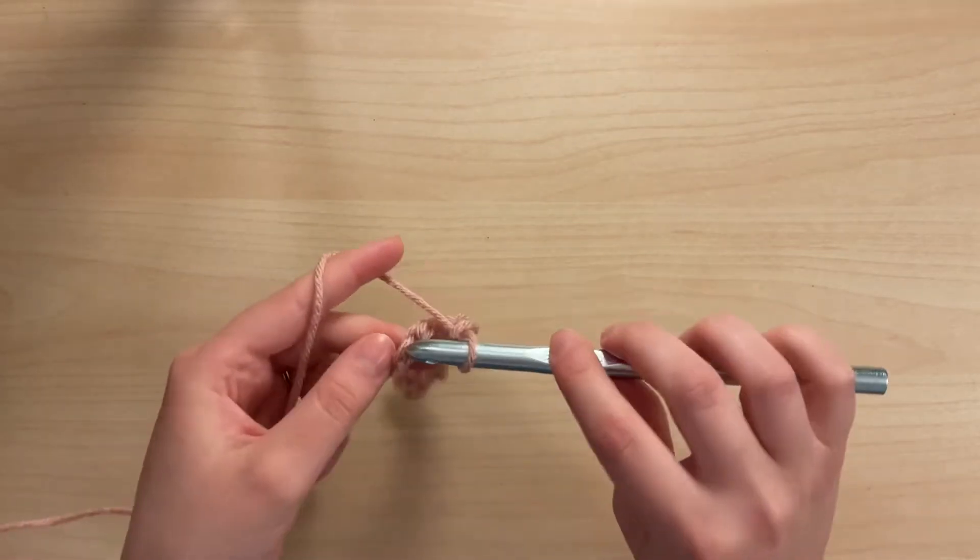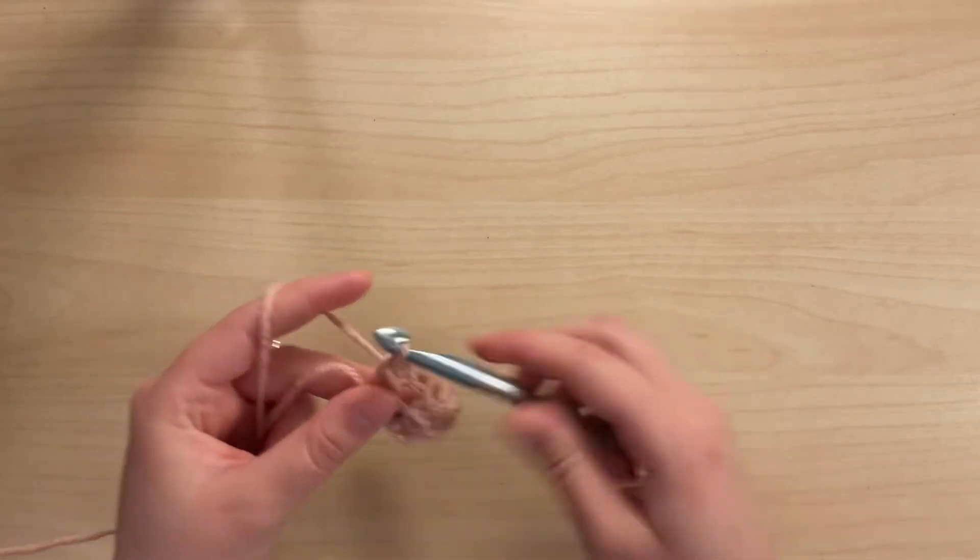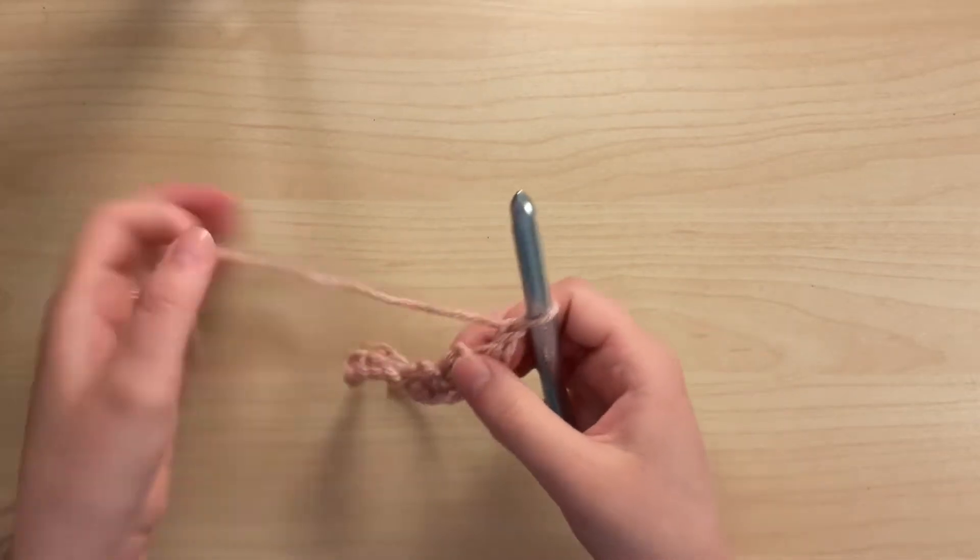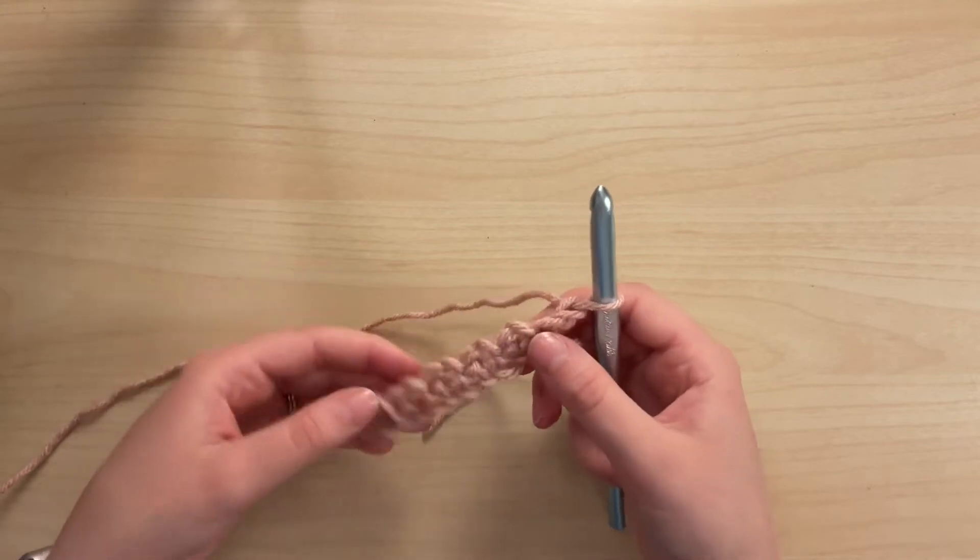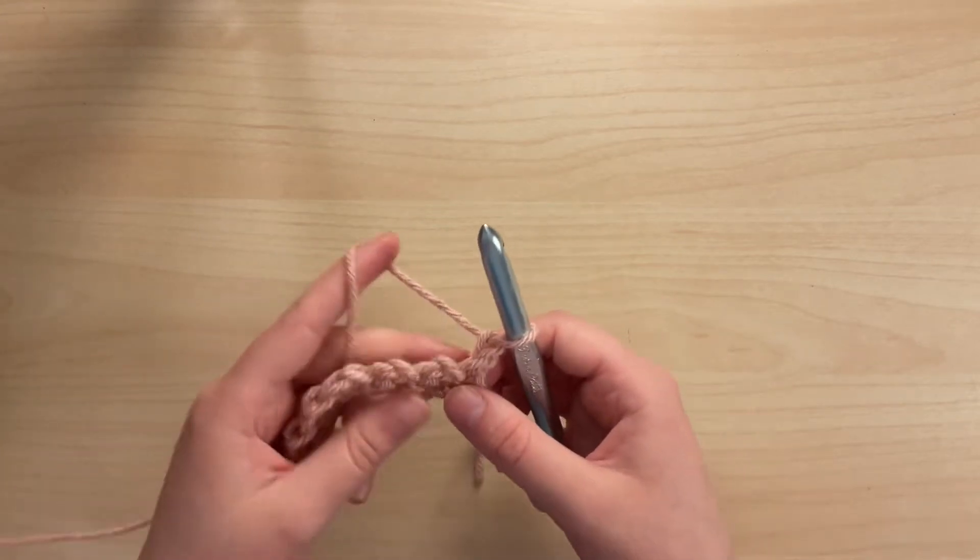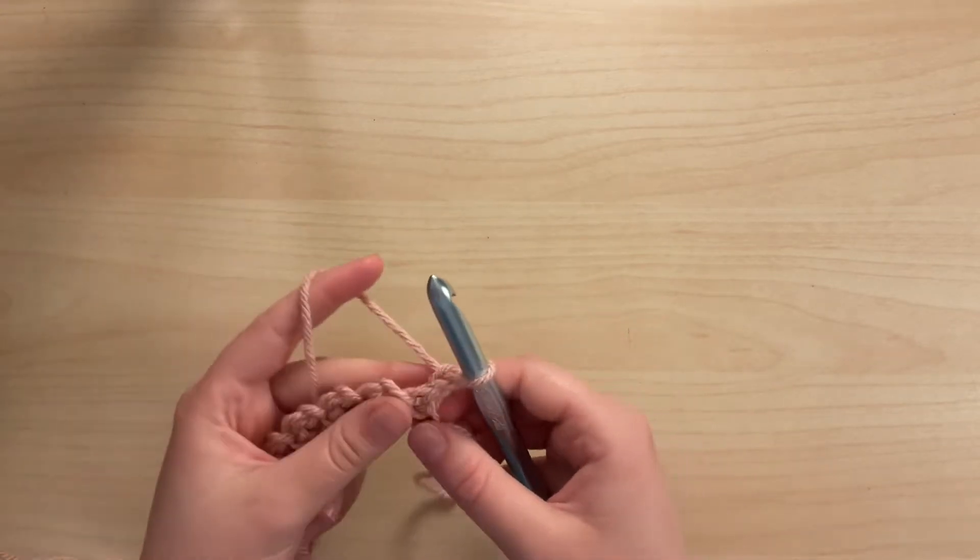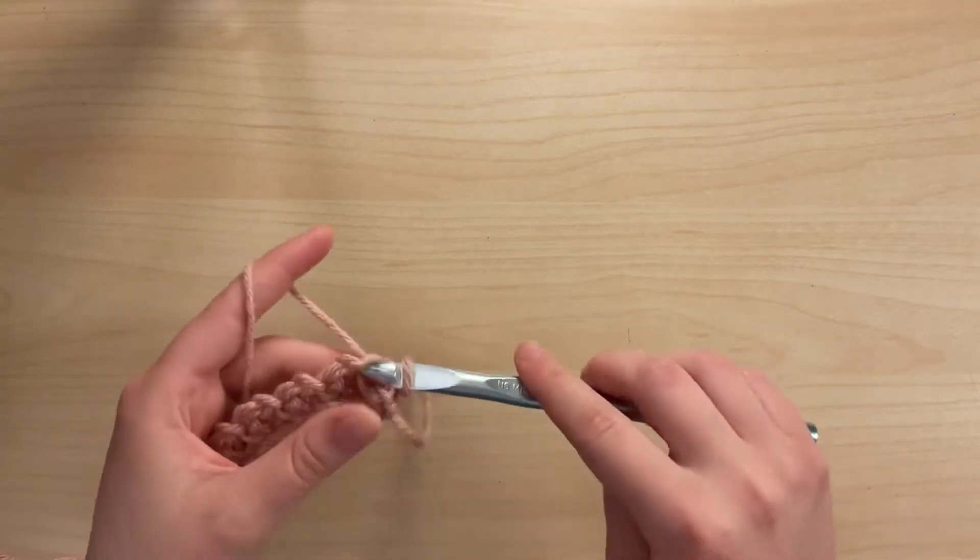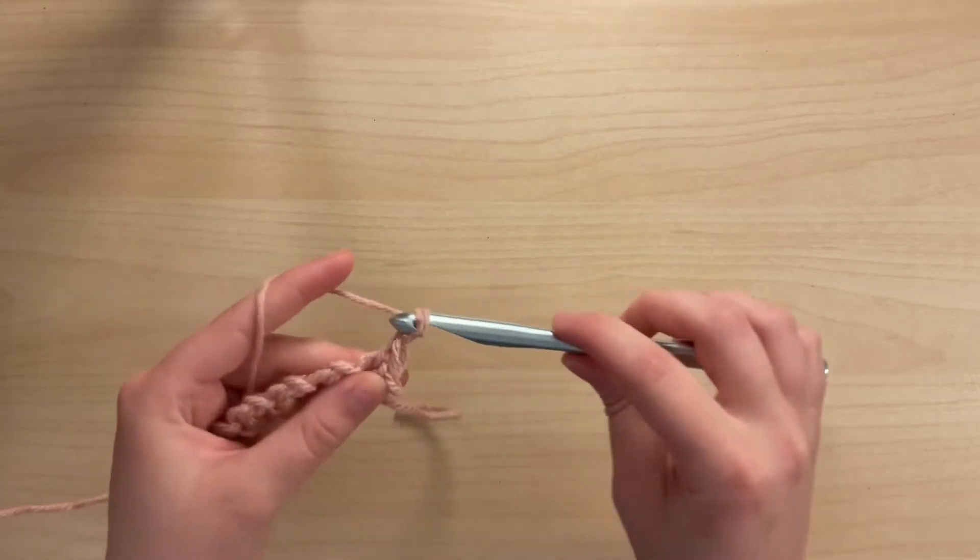Place a single crochet in the last chain of the foundation chain and we'll chain one and turn. In this pattern your chain one does not count as a stitch. So for row two we will place a single crochet in the first stitch of our row, then we'll chain one.